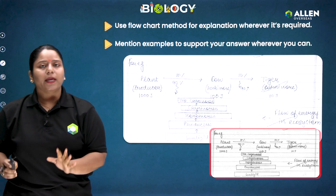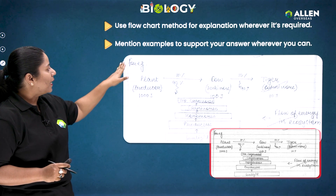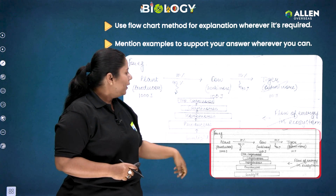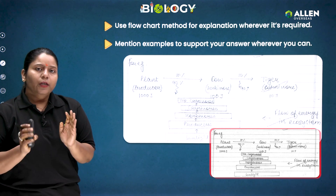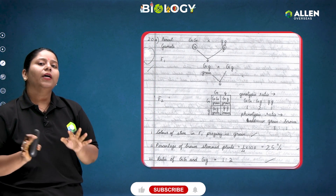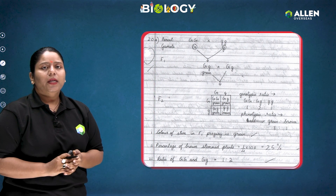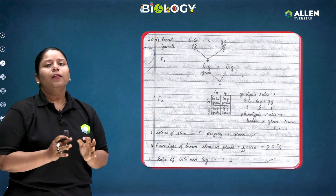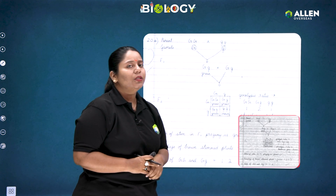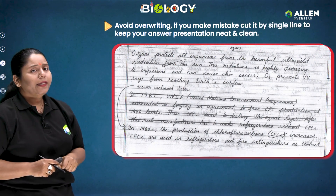Use a flowchart method for explanation whenever required, and mention examples to support your answers wherever you can, as examples help gain good marks. For instance, a student can give a food chain to explain the flow of energy in an ecosystem using a table method. For questions about hybridization — whether monohybrid, dihybrid cross, or sex determination — use a proper flowchart method to keep your presentation clean, and don't forget to mention the genotypic and phenotypic ratio.